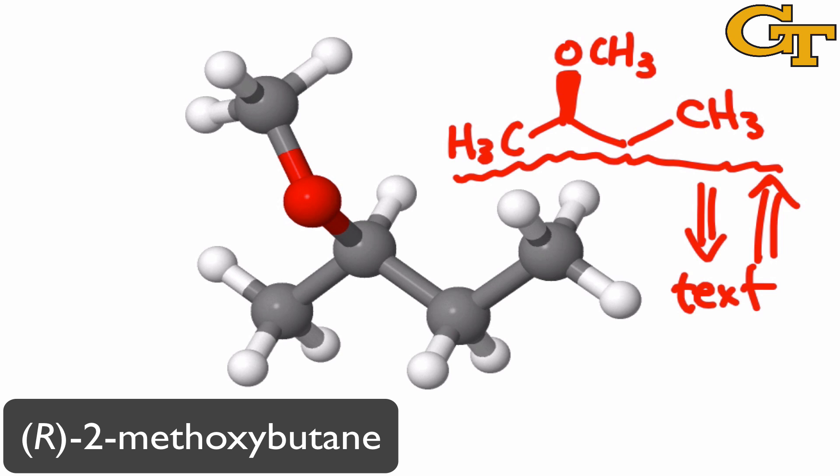For example, in the name of this compound, the R refers to the three-dimensional information at this carbon you see here, which has the hydrogen, the methoxy group, and two alkyl groups bound to it. Once chemists understood that it was important to indicate the configuration of that carbon, that became part of the name—the R part.